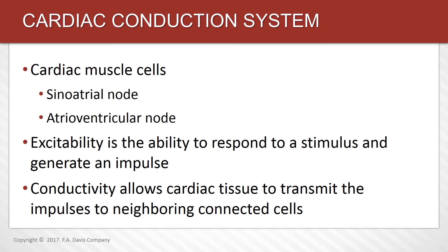Now we're talking about the cardiac conduction system — really, really important. The SA node, or sinoatrial node, is the normal pacemaker of the heart, with an inherent heart rate of 60 to 100 beats per minute. The atrioventricular node has a rate of 40 to 60. If other pacemakers fail, the ventricular cells can generate an impulse with an inherent rate of 20 to 40. The heart has its own excitability to generate its own impulse.